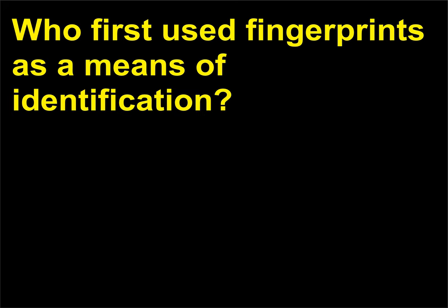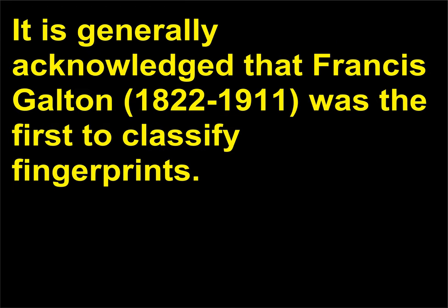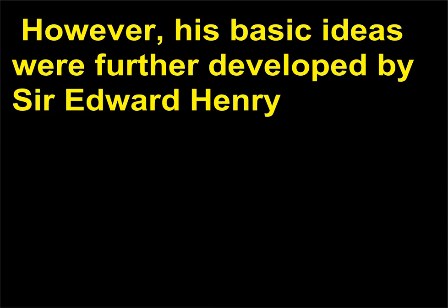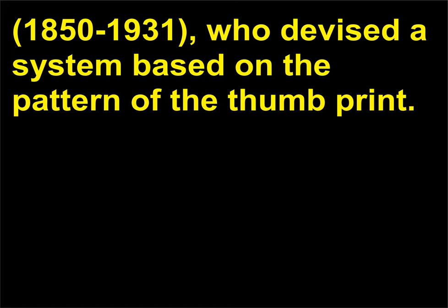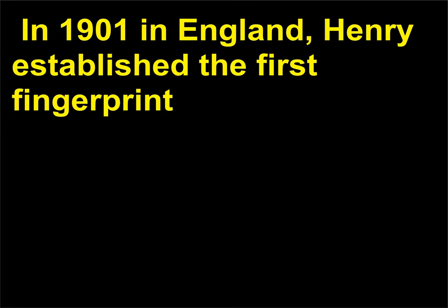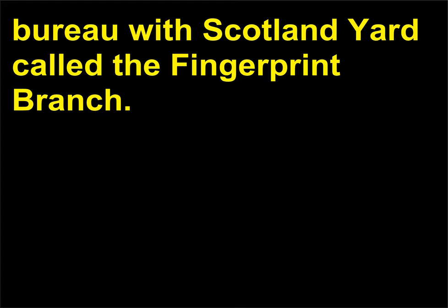Who first used fingerprints as a means of identification? It is generally acknowledged that Francis Galton (1822–1911) was the first to classify fingerprints. However, his basic ideas were further developed by Sir Edward Henry (1850–1931), who devised a system based on the pattern of the thumbprint. In 1901 in England, Henry established the first fingerprint bureau with Scotland Yard, called the fingerprint branch.